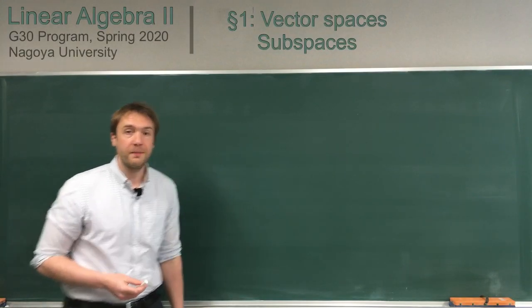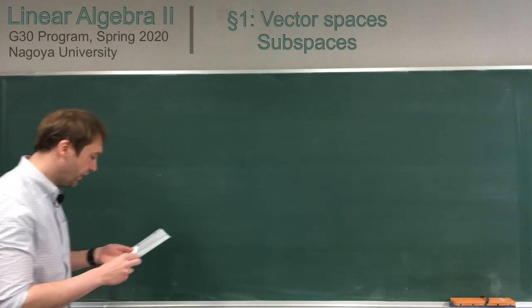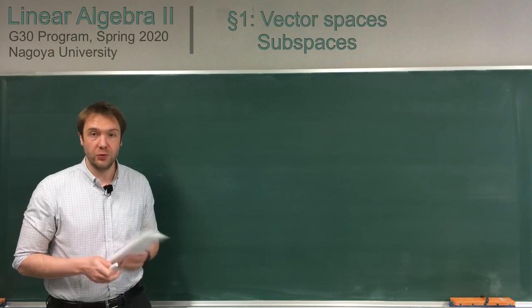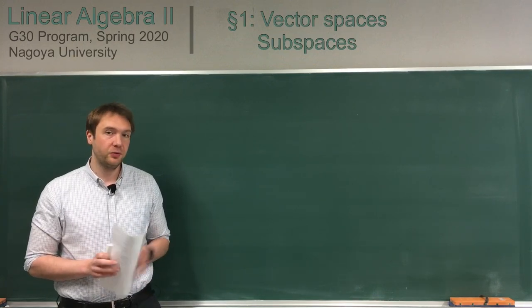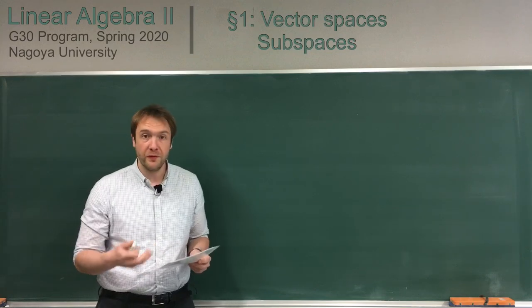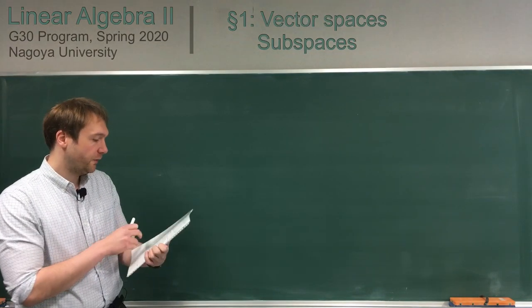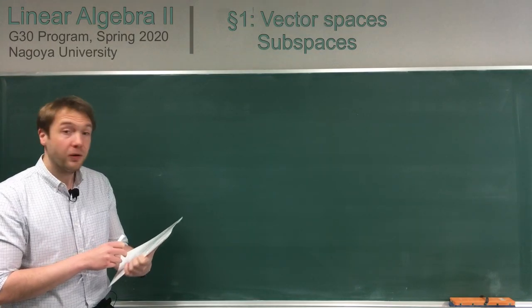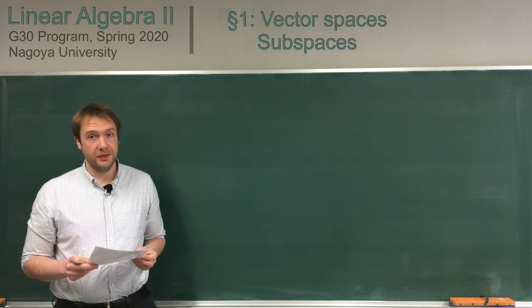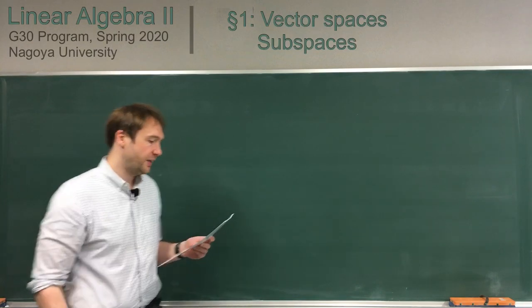Hey students, welcome to the second part of the first lecture of Linear Algebra 2. In the first part we introduced the notion of a vector space, which was a set together with two operations — addition and scalar multiplication — and then we proved some properties. In this part we will introduce a lot of notations, which are all familiar for the classical case when the vector space is given by Rn, which were just vectors with n entries.